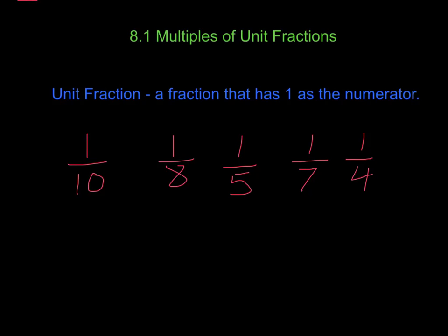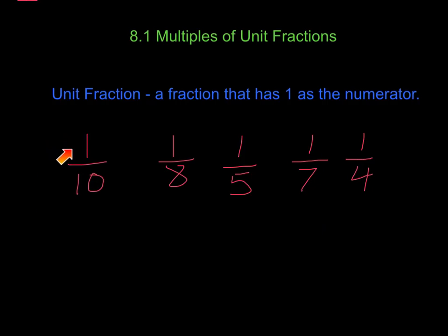Today we're going to be working with multiples of unit fractions. A unit fraction is a fraction that has 1 as the numerator. So in this case we have 1 tenth, 1 eighth, 1 fifth, 1 seventh, and 1 fourth as our examples. Because each of these have a 1 as the numerator, they are known as unit fractions — they're the smallest part of the whole that we can have.